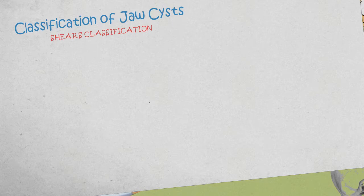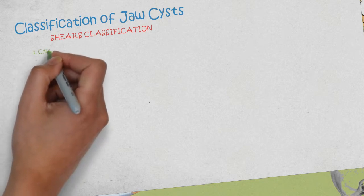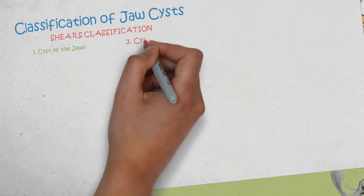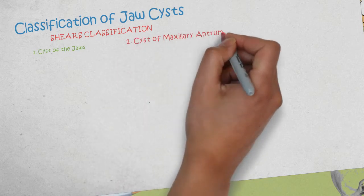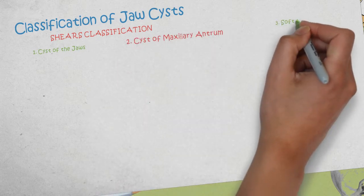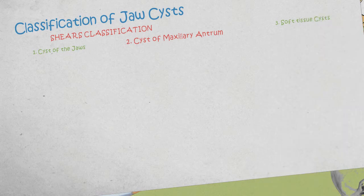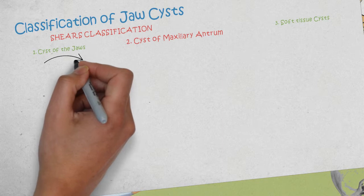The classification we are going to be using in this presentation is the Shears classification, which is divided into three types. Number one is the cysts of the jaws. Number two, cysts associated with the maxillary antrum. Number three, cysts of the soft tissues of the face, neck, and the mouth.